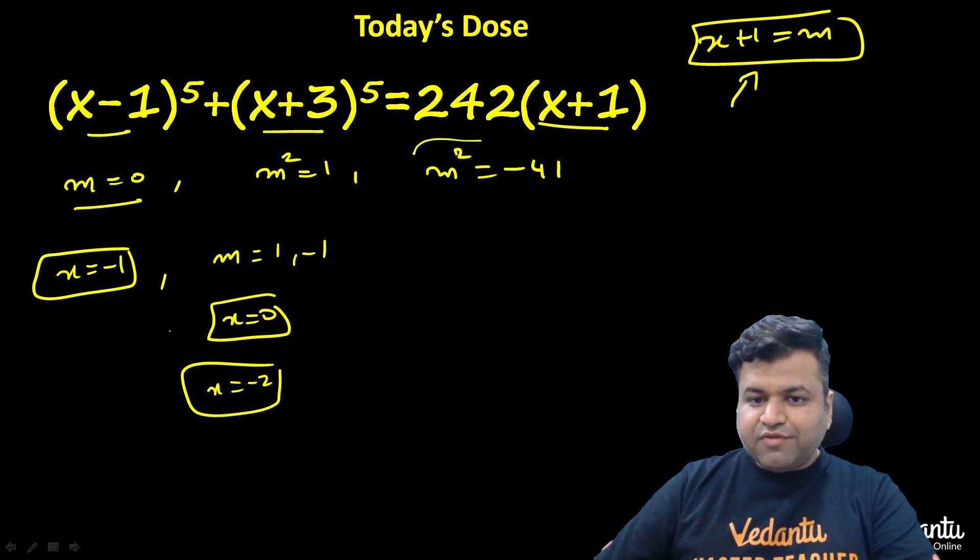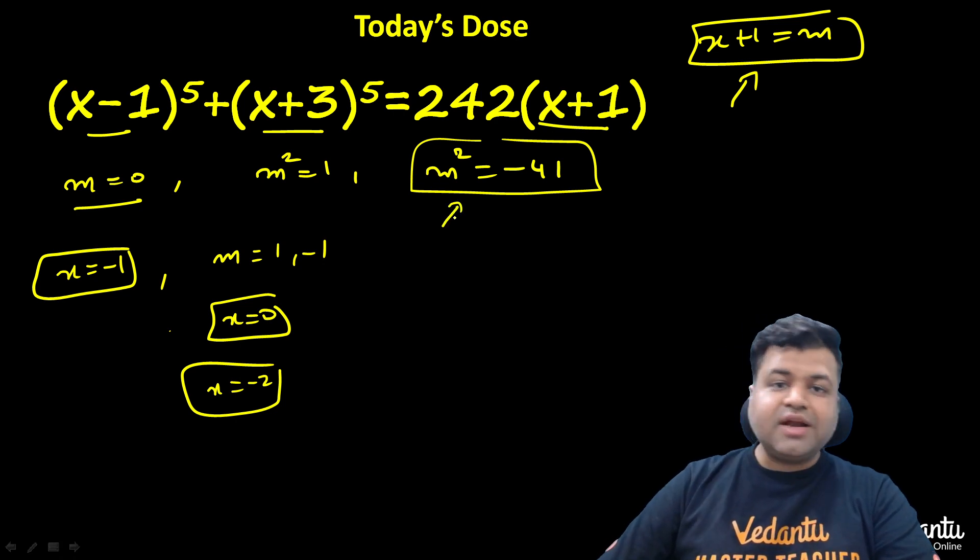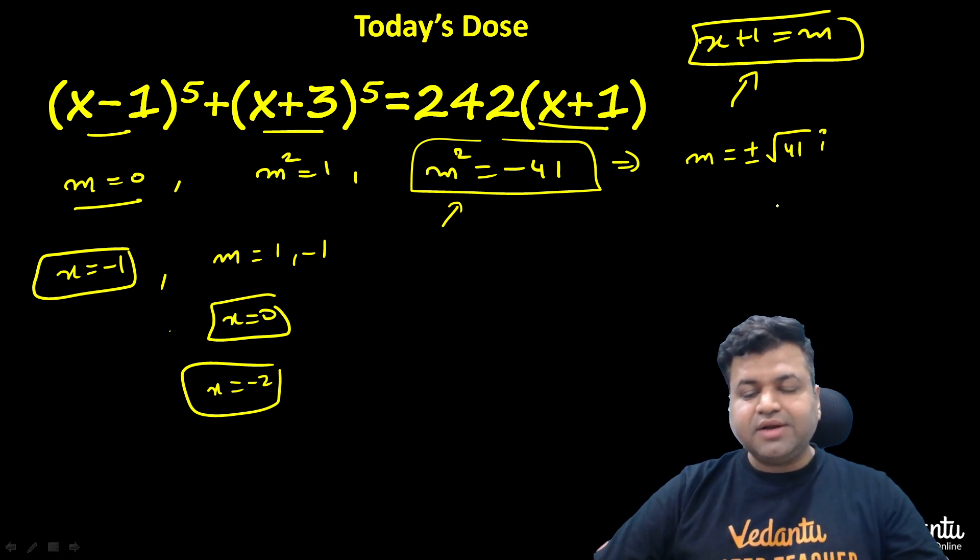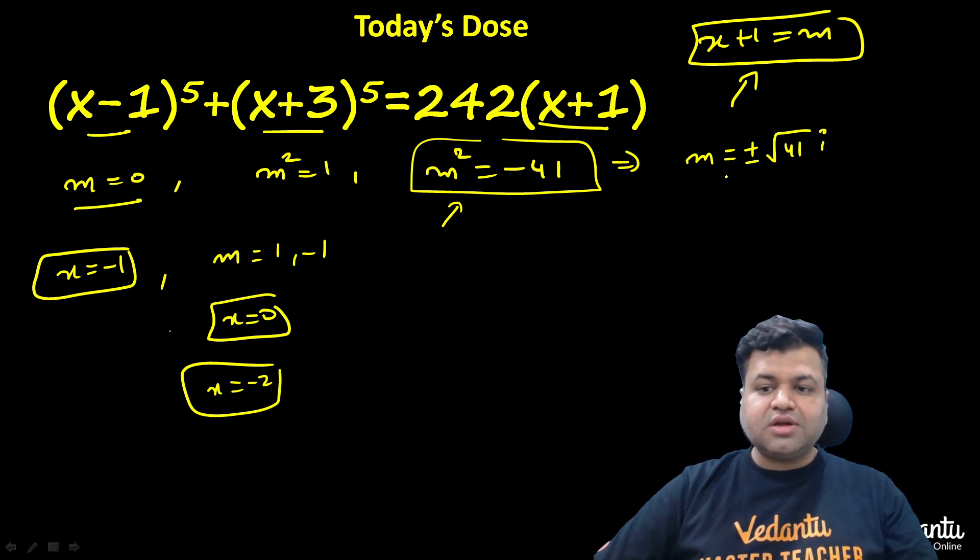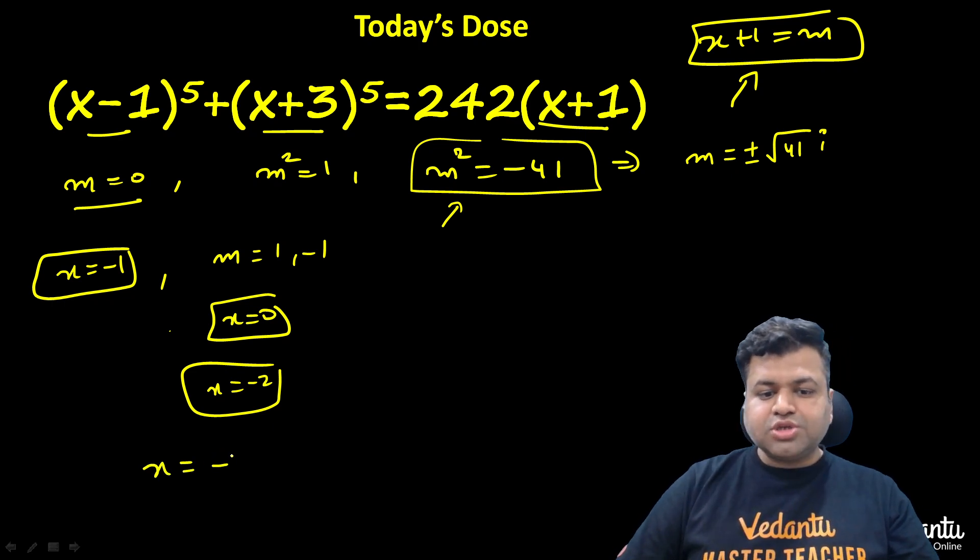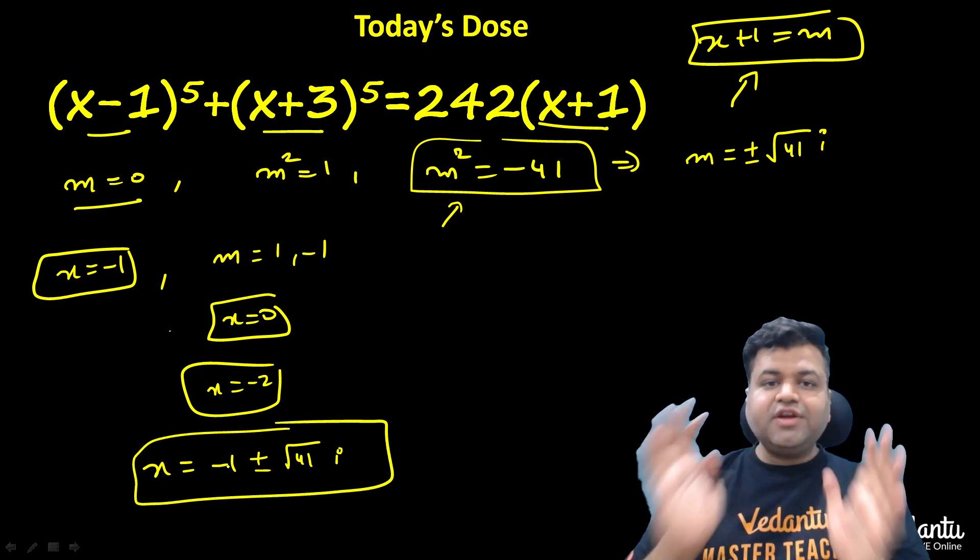Same with x = -2. But what happens when m^2 = -41? This particular m^2 value will give us imaginary solutions. If m^2 is -41, then m will be ±√(-41)i. These are the two values that m will get. And that means x will get two more solutions: -1 ± √(41)i. These are basically the five solutions for this particular five degree polynomial.